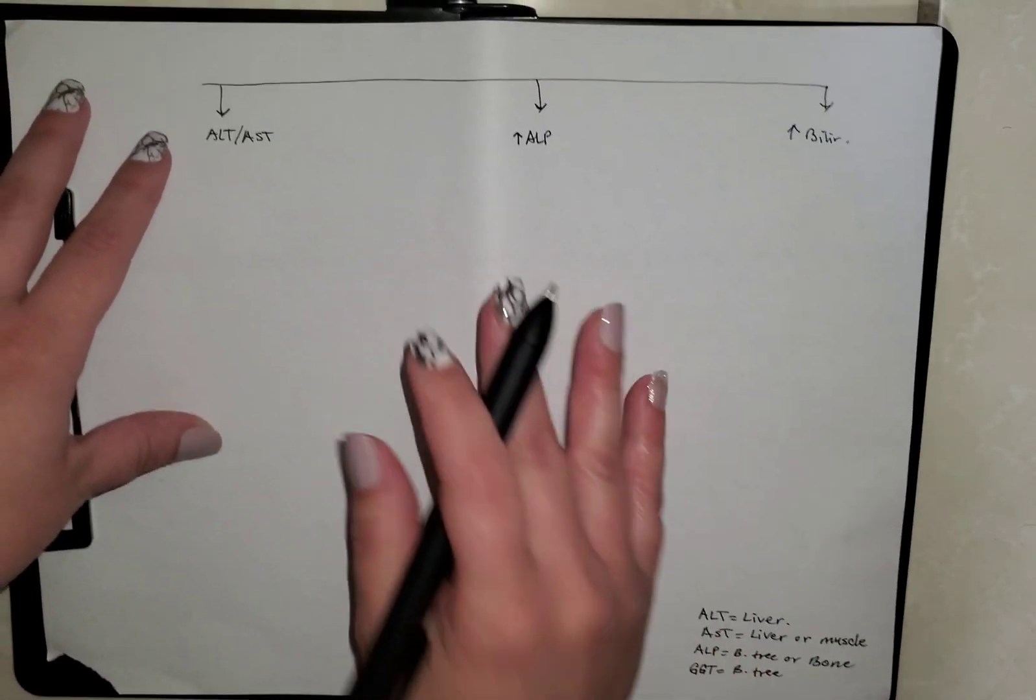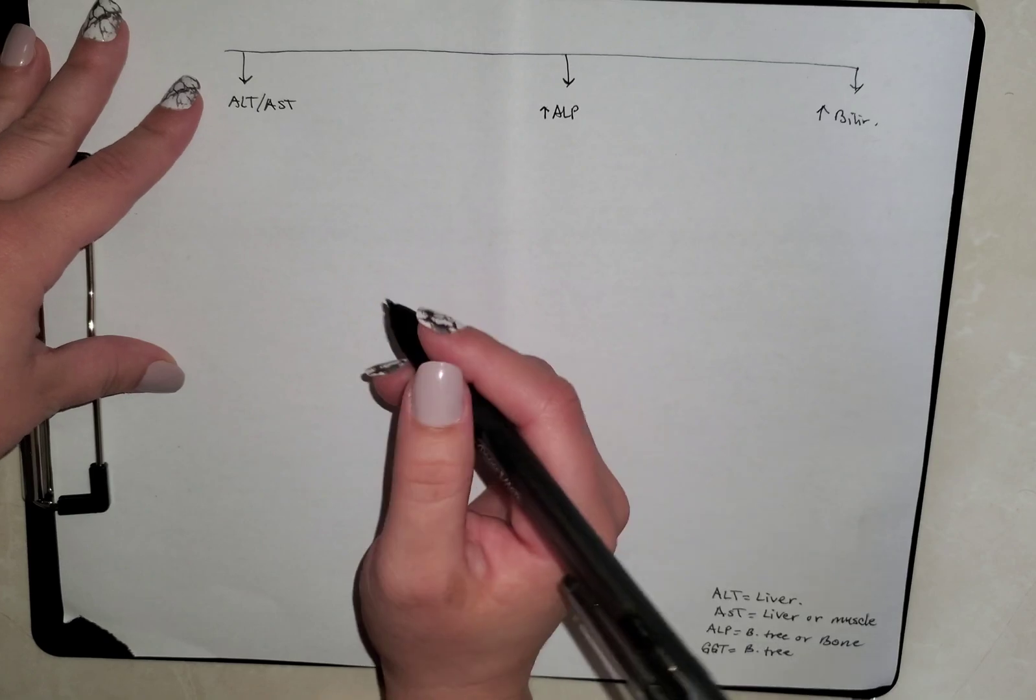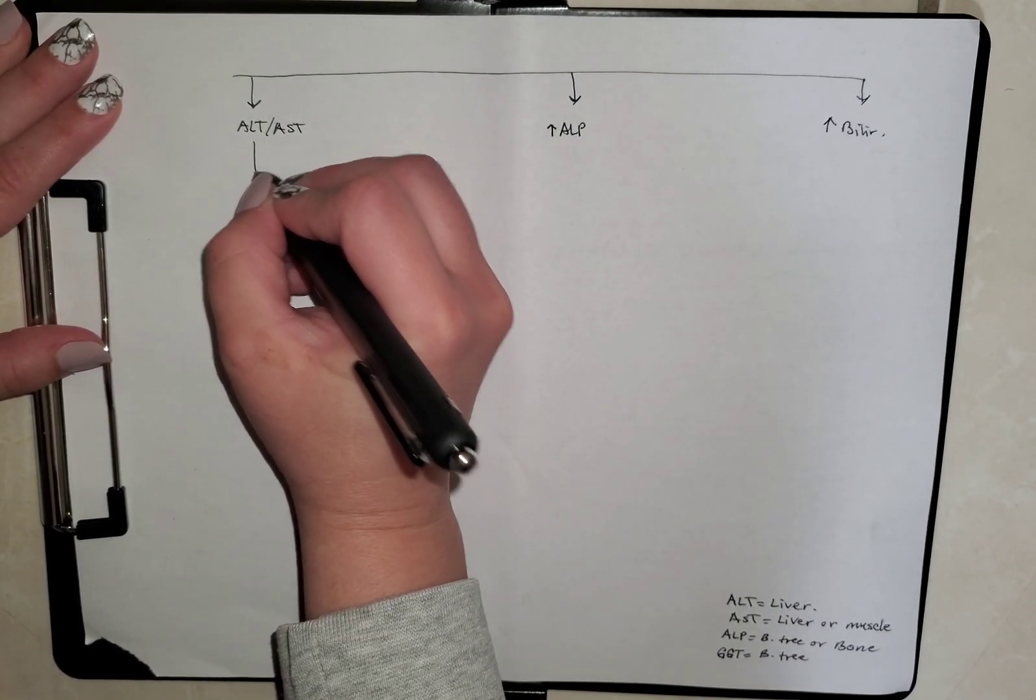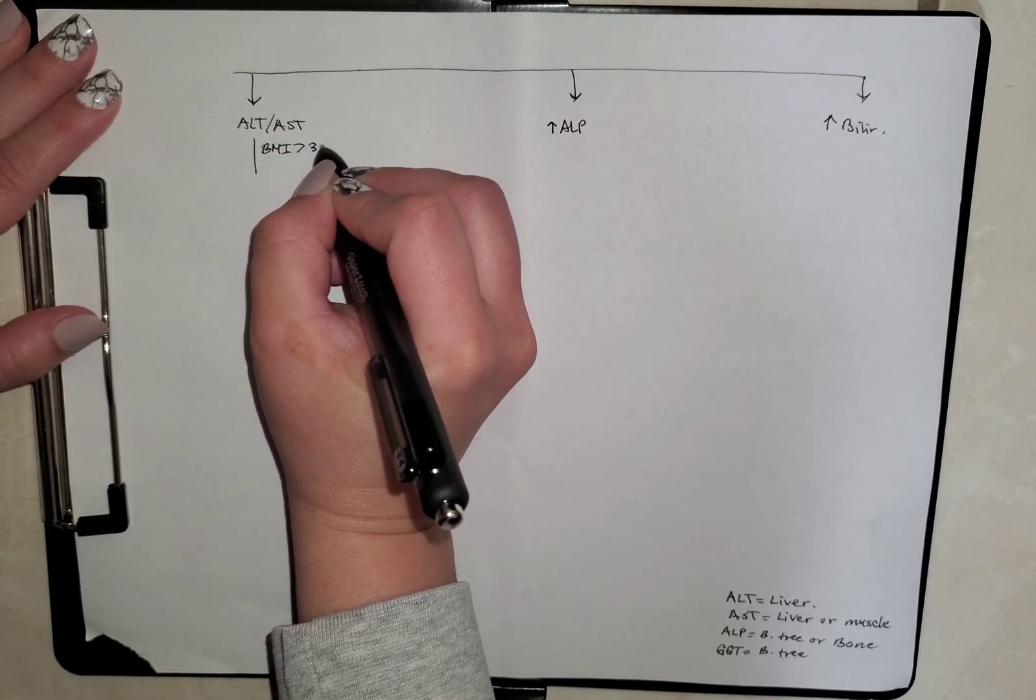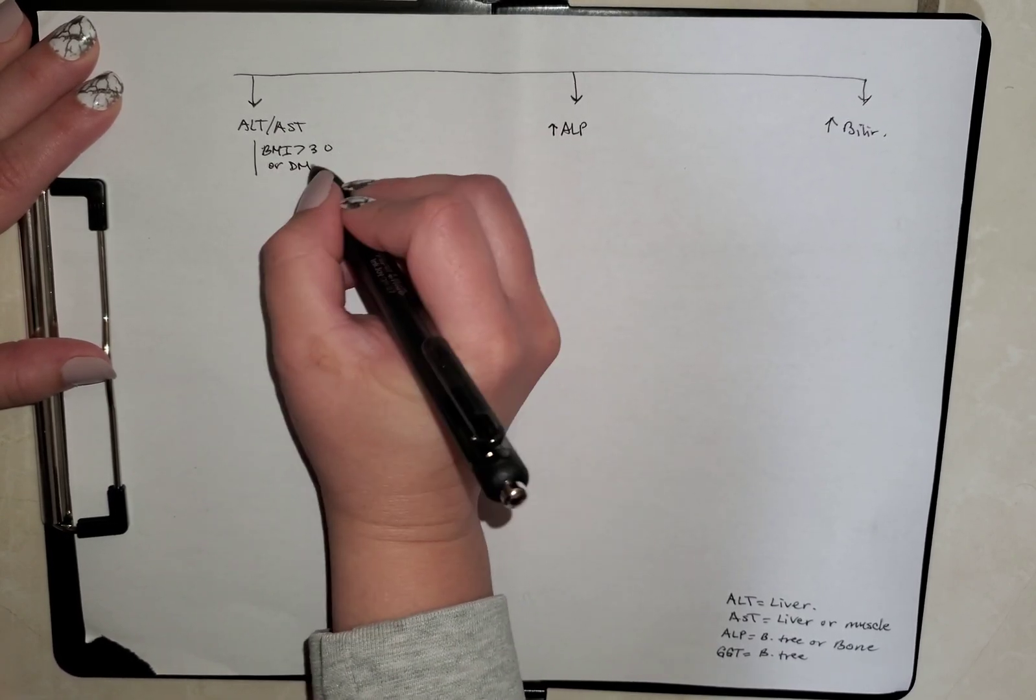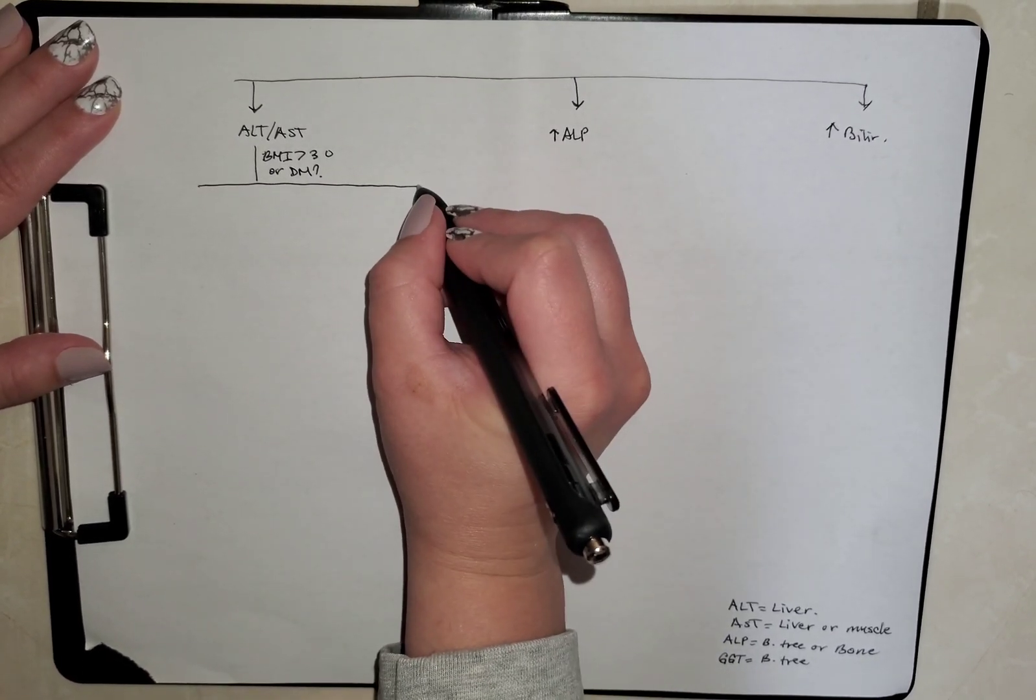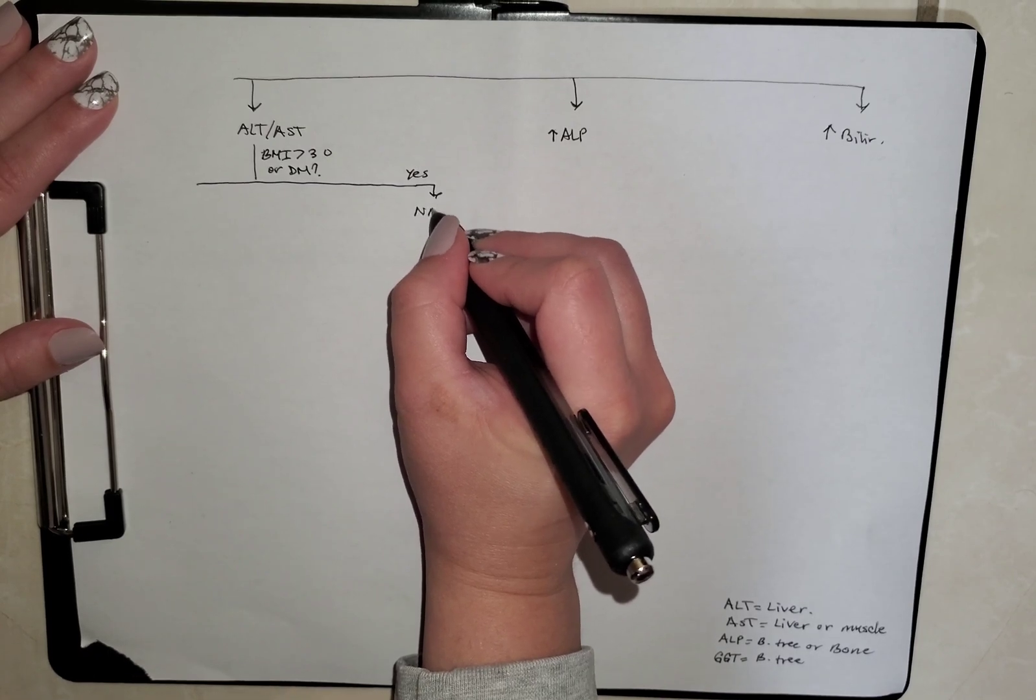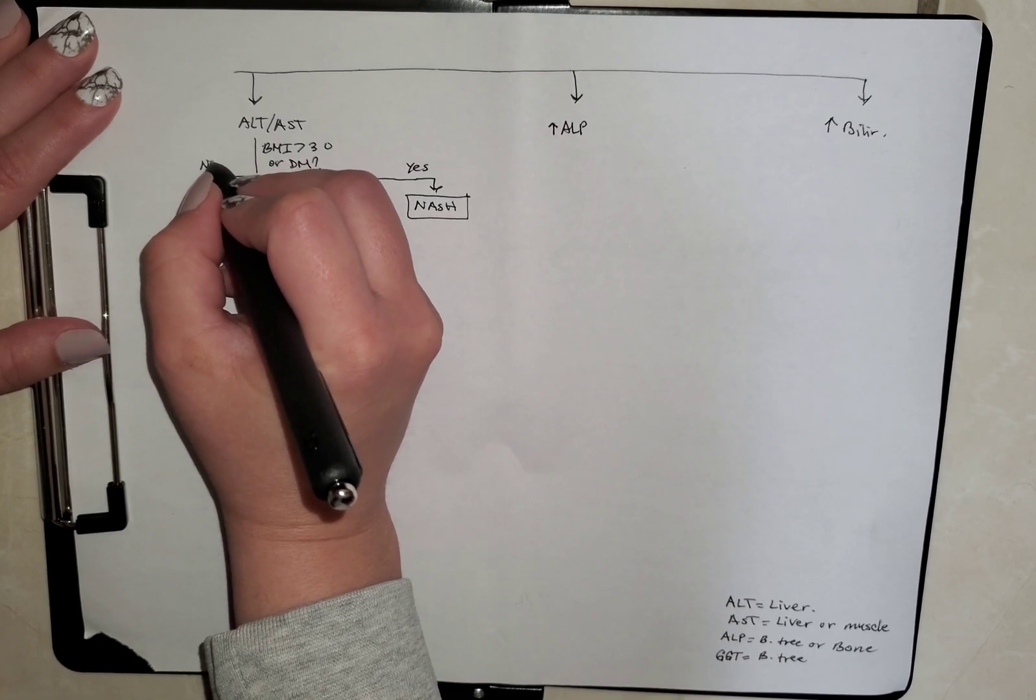So now, if you have an increase in ALT and AST, of course it's liver damage. So it can be various things. Let's start with the easier ones. Is your patient obese, meaning has a BMI over 30, or has diabetes? If your answer is yes, then this is NASH, which is the non-alcoholic fatty liver disease.